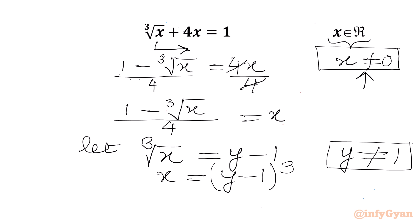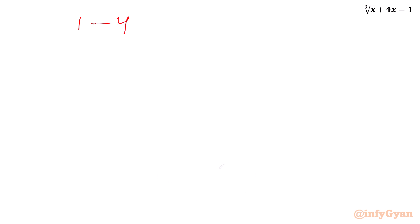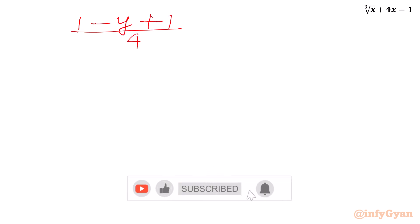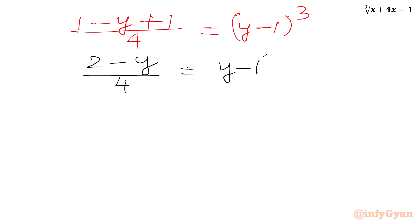So I can write our equation in y as: (1 minus cube root x) over 4 equals x, which becomes (1 minus (y minus 1)) over 4 equal to (y minus 1) whole cube. Remember y cannot be 1. Now simplifying the LHS: 1 minus y plus 1 gives numerator 2 minus y over 4, and RHS is (y minus 1) whole cube.